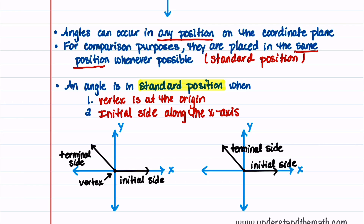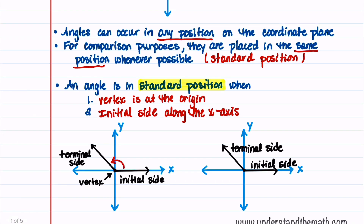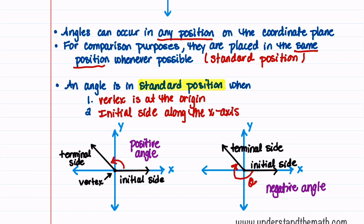I have a picture here of two different angles in standard position. The first one is a picture of a positive angle, which we'll call theta — let's label this as a positive angle in standard position. The second picture is of a negative angle, which we'll also indicate as theta — let's label this as a negative angle in standard position. Notice that for both of these examples, the vertex is at the origin and the initial side of the angle lies along the x-axis.